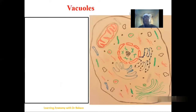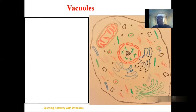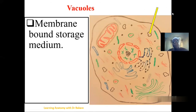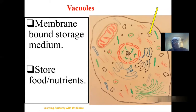The vacuoles are also membrane-bound cell organelles. These are basically storage units that store molecules the cell needs, like nutrients and food substances, so that when they are needed, they can be used by the cell to carry out its metabolic activities.